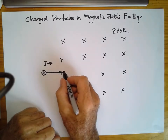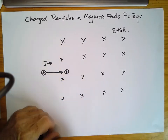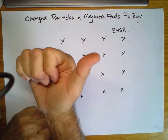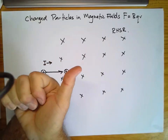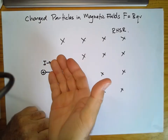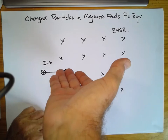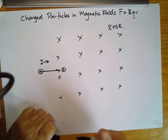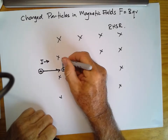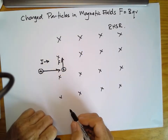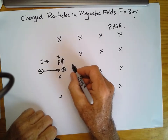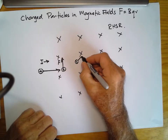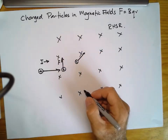When this particle reaches this point, what is the direction of the force? Using the right-hand slap rule: thumb in the direction of the current to the right, magnetic field into the page — the force on this particle is to the top of the page. So it experiences a force in this direction, which moves the particle to the next point, where it is now moving upward at speed v.